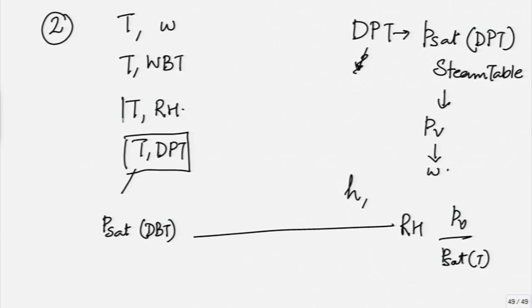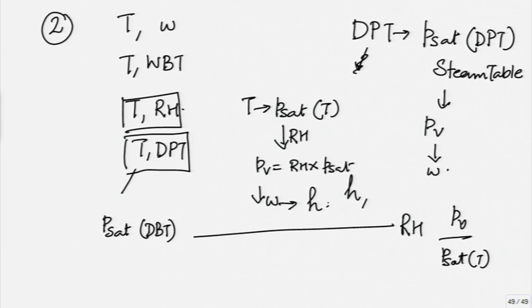If I have T and relative humidity, what it means is I can using T get P sat at T. I will use relative humidity because it just gives me PV by P sat. PV will be just relative humidity as a fraction multiplied by P sat. Once I know PV, I can get omega and once I get omega, I can get H. So, I know everything.